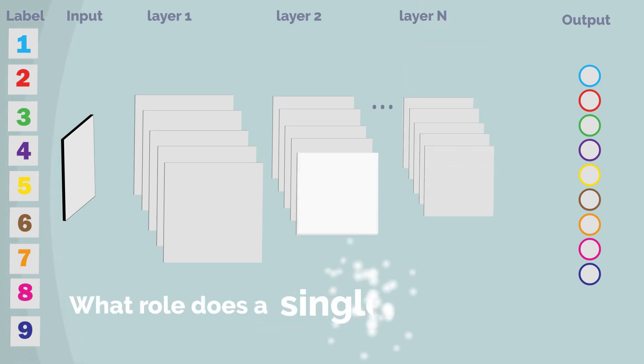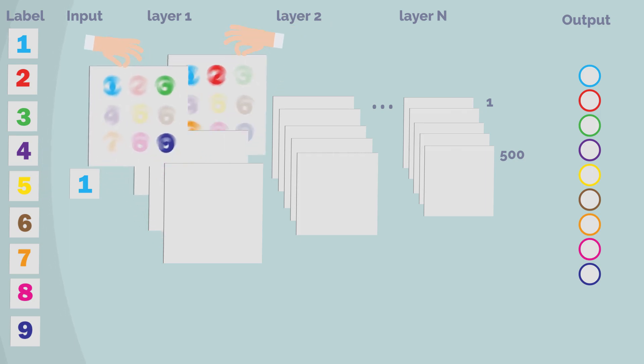But what role does a single filter play? Assume input of type 1 is presented to the system. Each filter recognizes a different small set of labels.